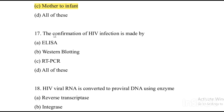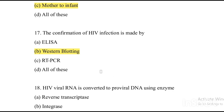Next question: The confirmation of HIV infection is made by — Option A: ELISA. Option B: western blotting. Option C: RT-PCR. Option D: all of these. The answer is Option B, western blotting test.